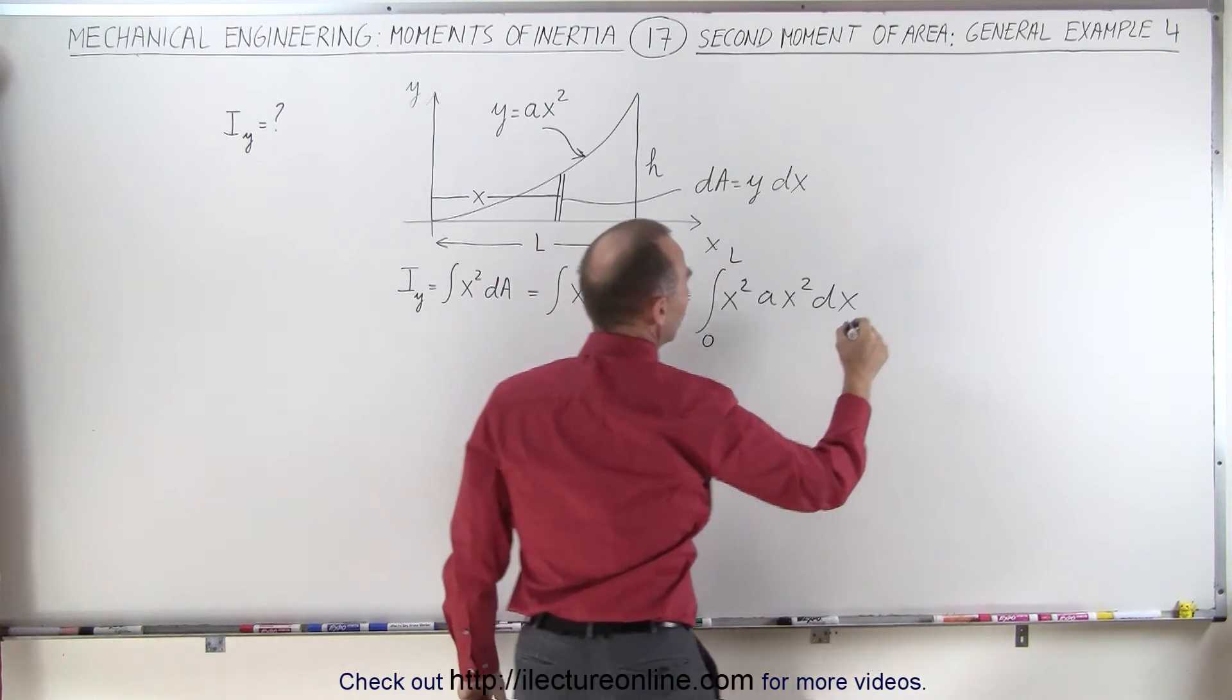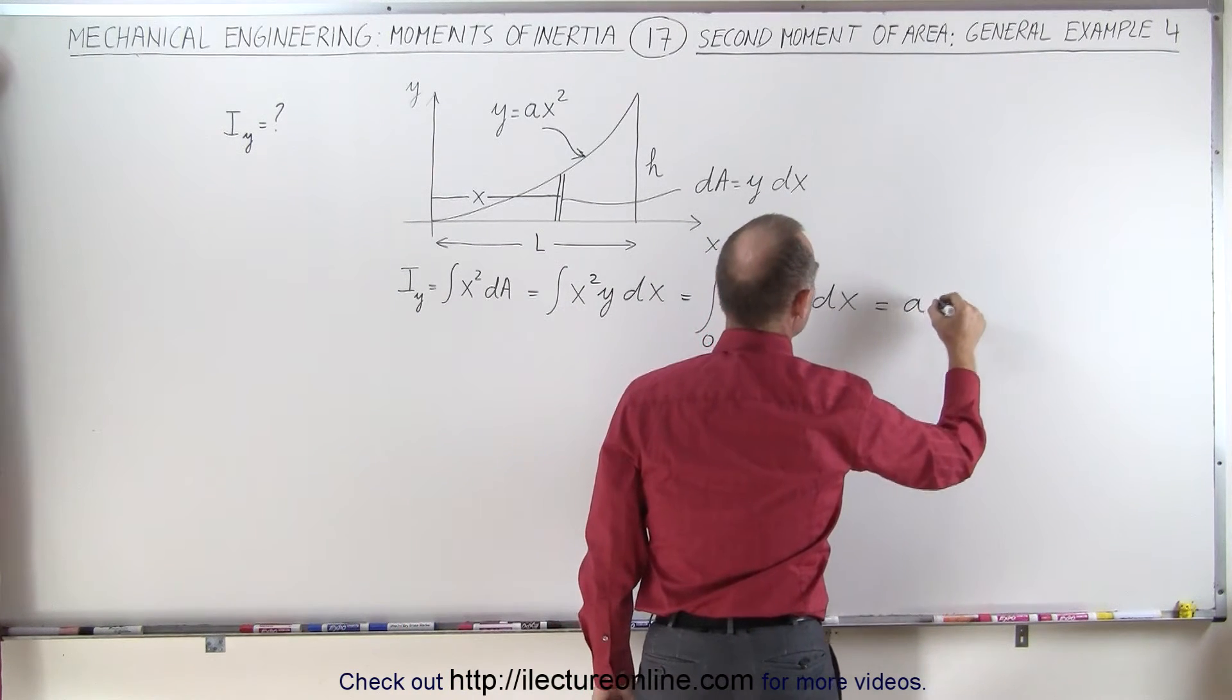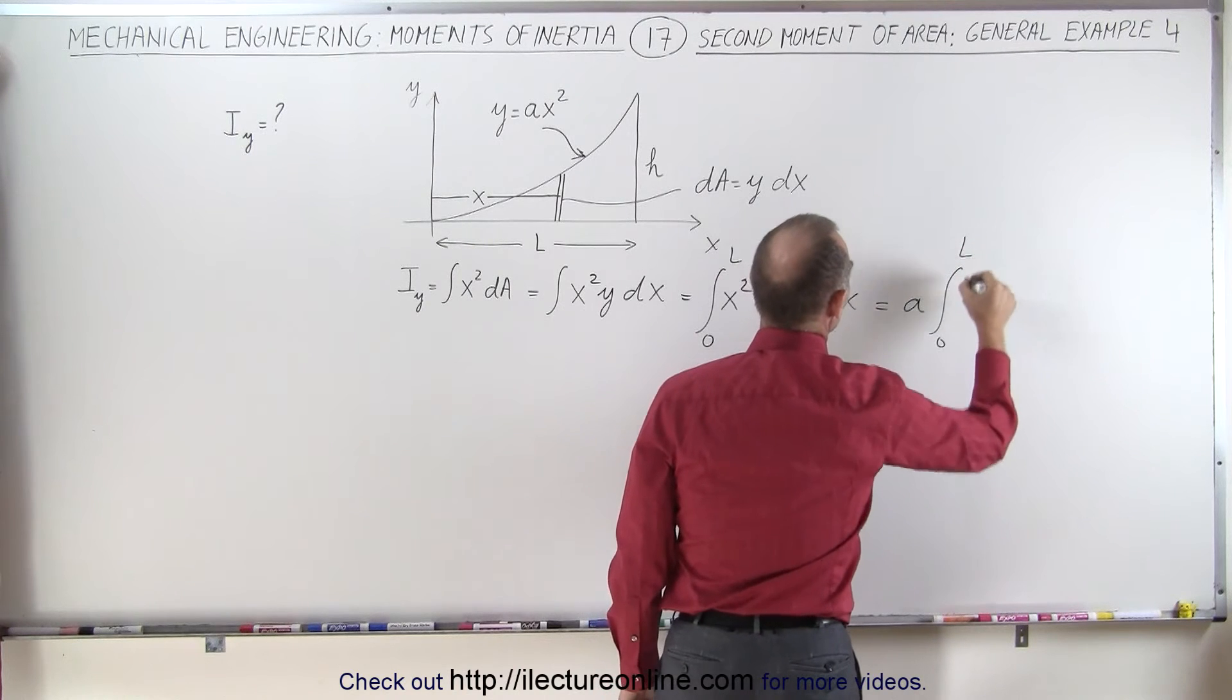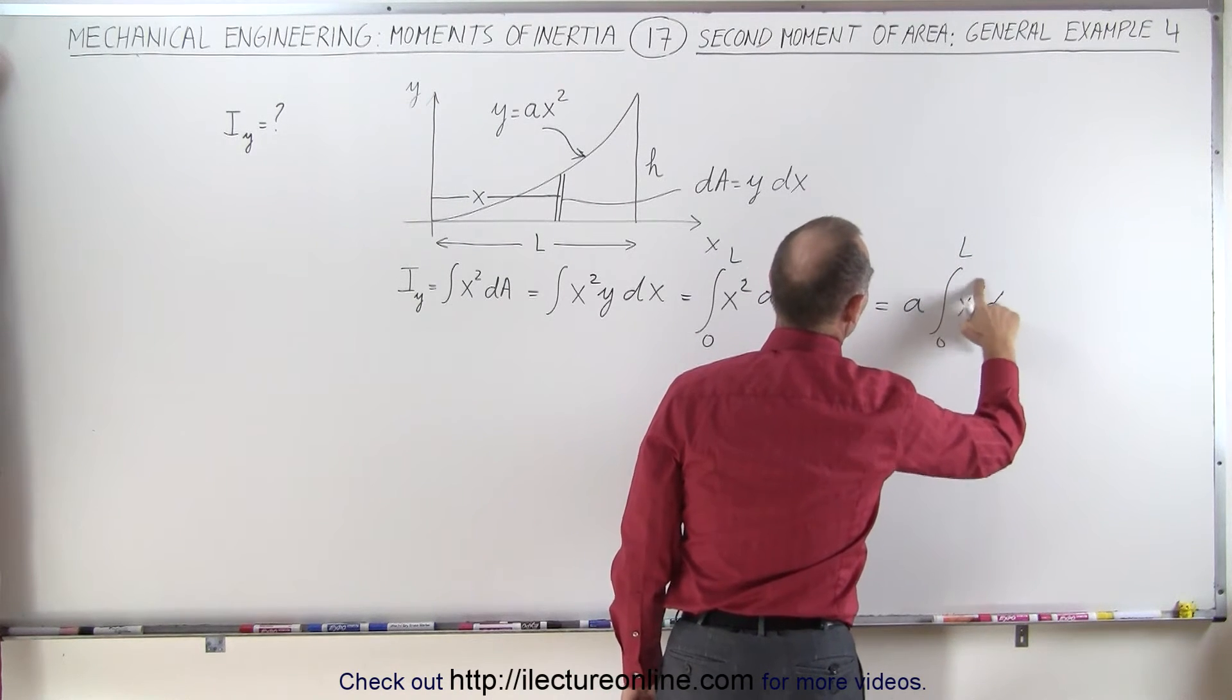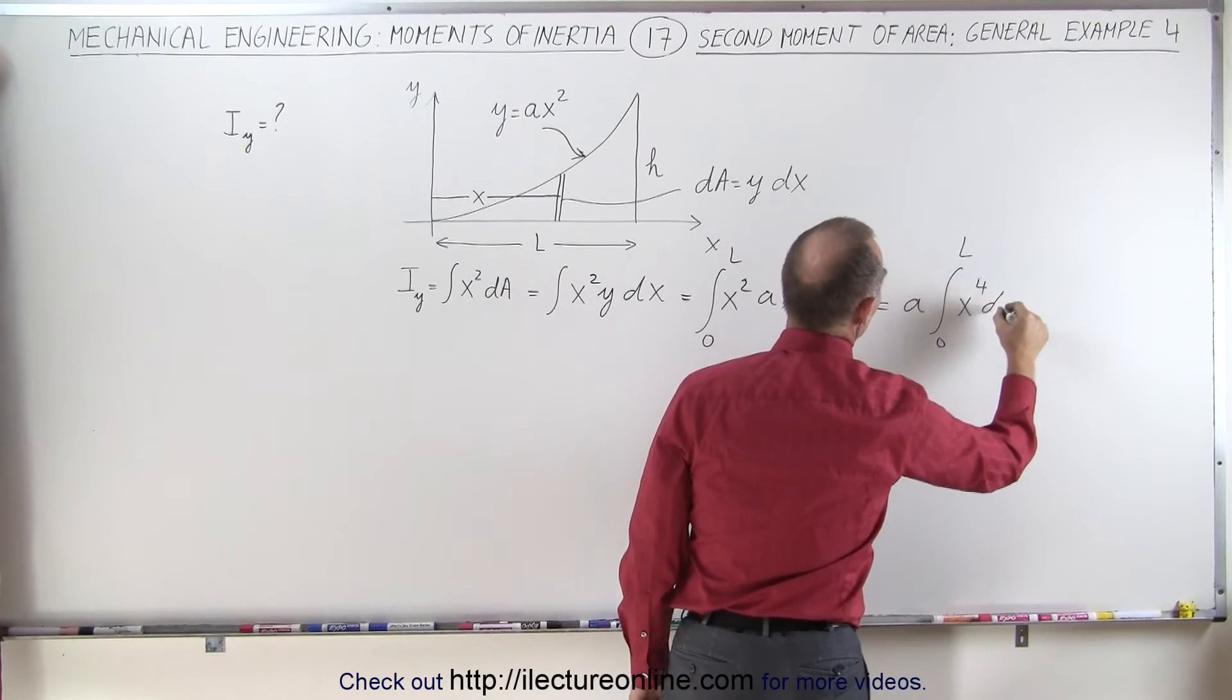0 to L, which means that this is equal to A times the integral from 0 to L of x squared, not x squared but x to the fourth power dx.